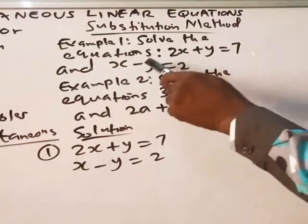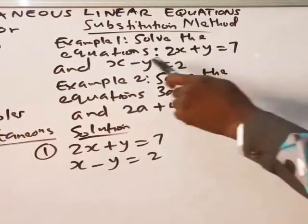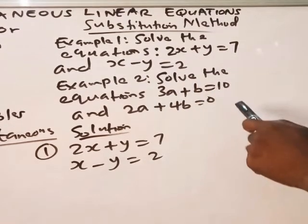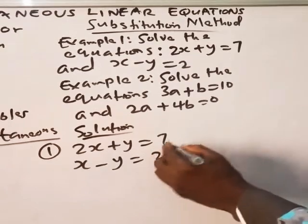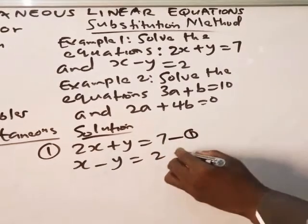So what we do is that we try to reduce the two unknowns to one unknown by substitution. Now, solve the equations 2x plus y is 7 and x minus y is 2. Now, you write the equations. You label them equation 1, equation 2.